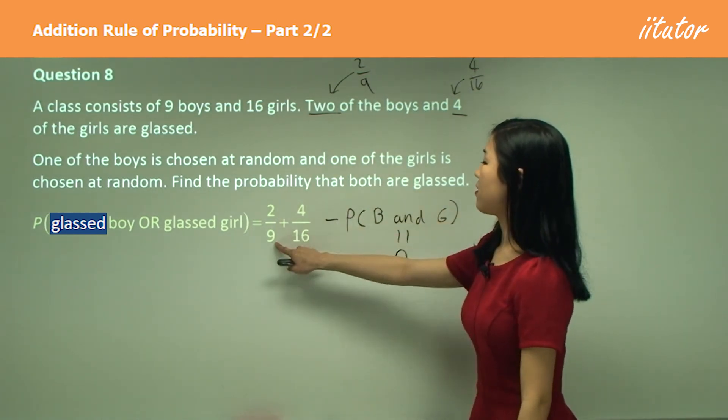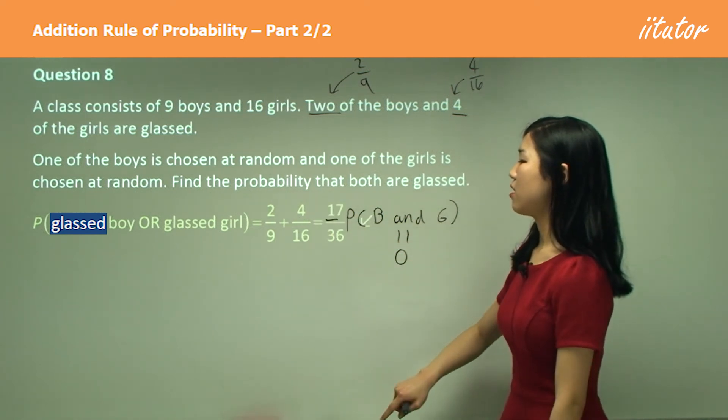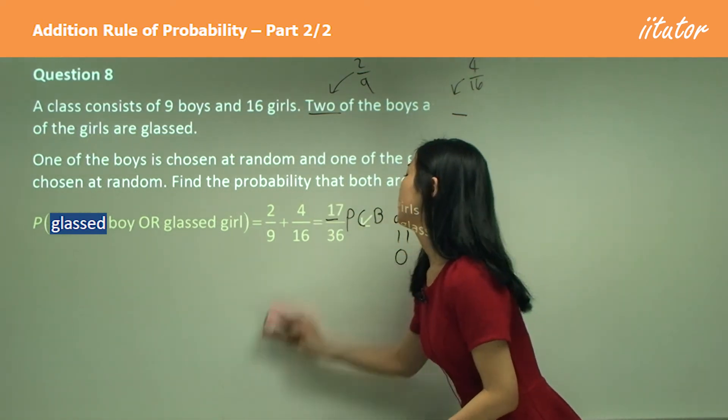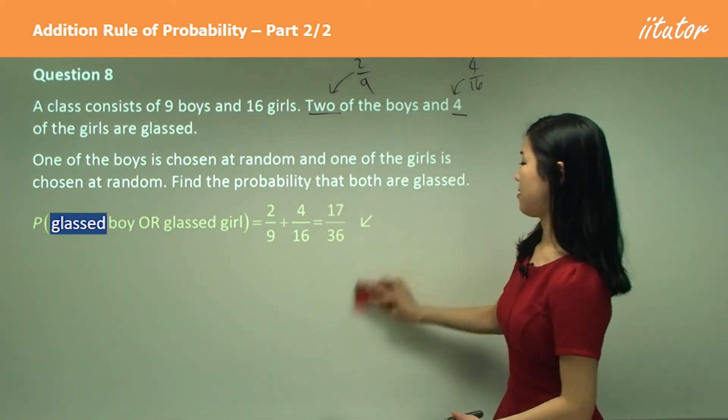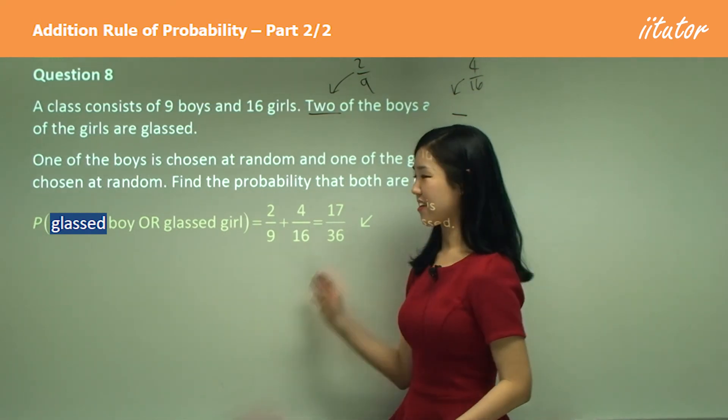So therefore, add up two over nine plus four over 16, which is simplified to 17 over 36. Okay, so you can do the calculation on your own.